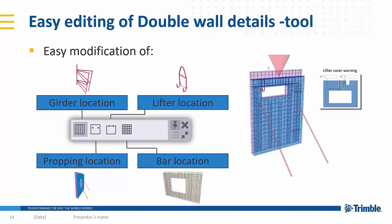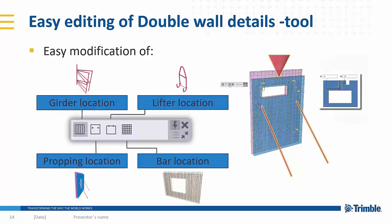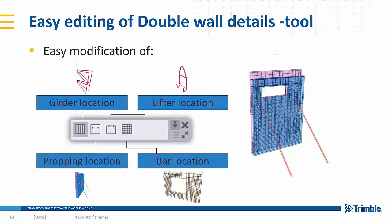Here is just one example of editing the lifter location where there's a cone warning about the lifters being too close to the opening. As you can see, selecting the tool activates the contextual toolbar and allows you to drag the lifter location. After an update, the cone for the warning disappears and you know that everything is okay.